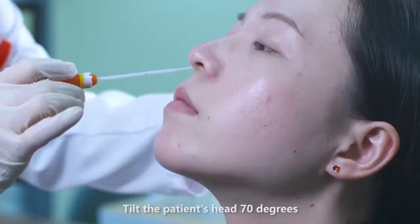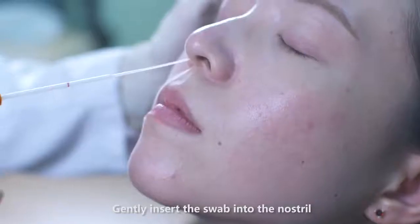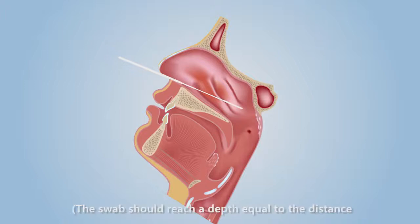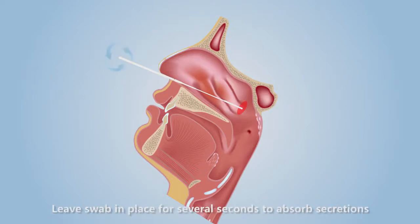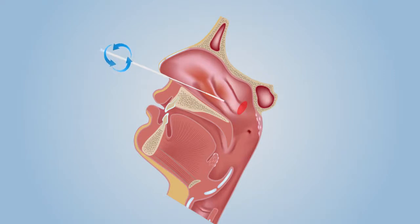Tilt the patient's head 70 degrees. Gently insert the swab into the nostril. The swab should reach a depth equal to the distance from the nostrils to the outer opening of the ear. Leave swab in place for several seconds to absorb secretions. Slowly remove the swab while rotating it.